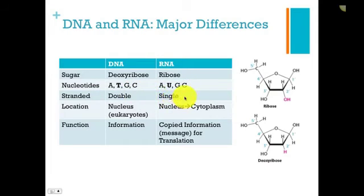The location is also different. DNA is located in the nucleus in eukaryotes, and it always stays there. It never, ever leaves the nucleus. Whereas RNA might be generated in the nucleus, but then it can leave and go into the cytoplasm.